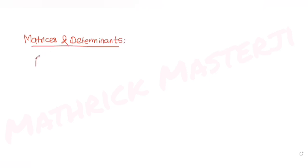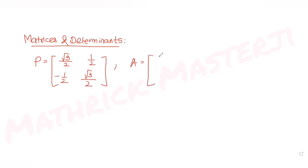Hi guys, I hope you are all doing well. Today's question is from the topic of matrices and determinants. The question tells us that P is a 2x2 matrix with elements √3/2, 1/2, -1/2, and √3/2. The other matrix A equals [1,1; 0,1].